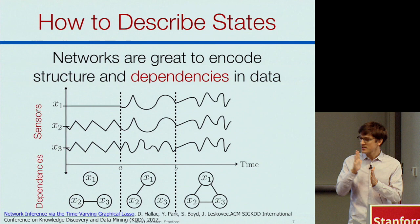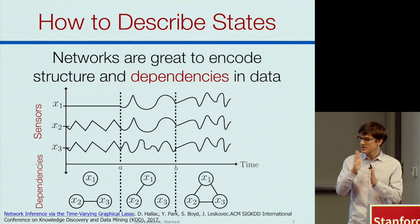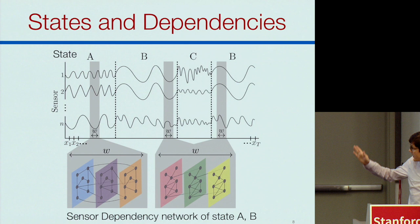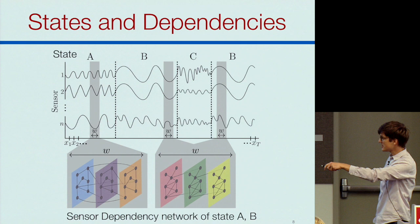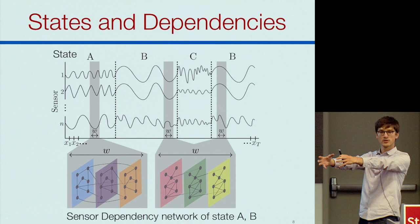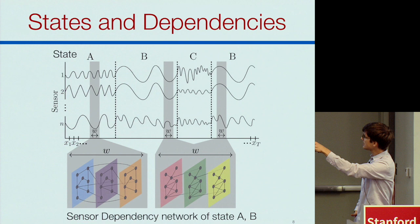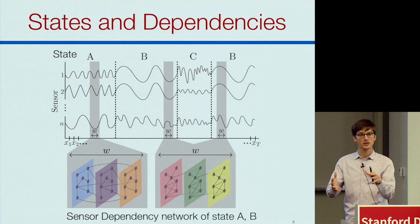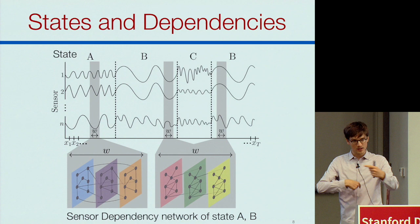We don't only learn dependencies between sensors at a given time — we learn multi-layer networks with dependencies both within a given timestamp and across time. So a high reading on one sensor might predict a slow reading on another sensor three time units later. This allows us to identify the states of the system, and for every state we can look at this network and see how sensor readings are related both within and across timestamps.